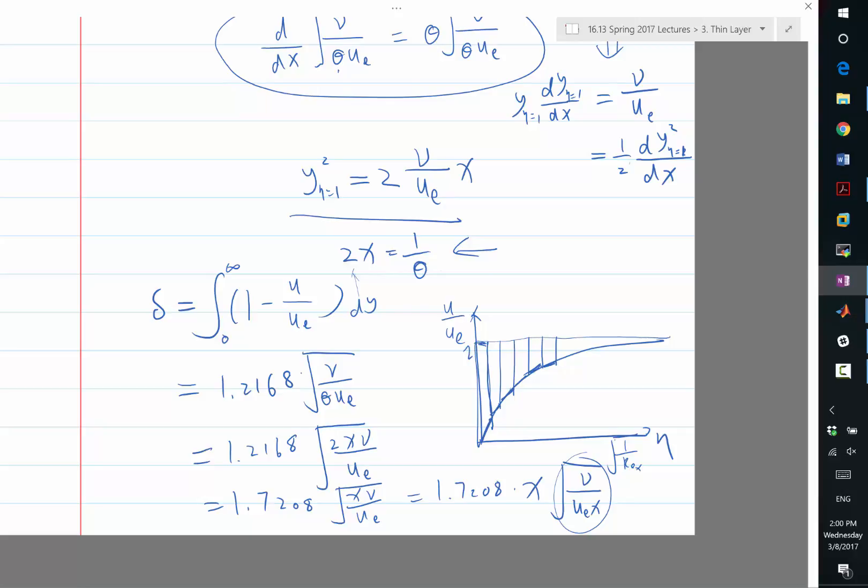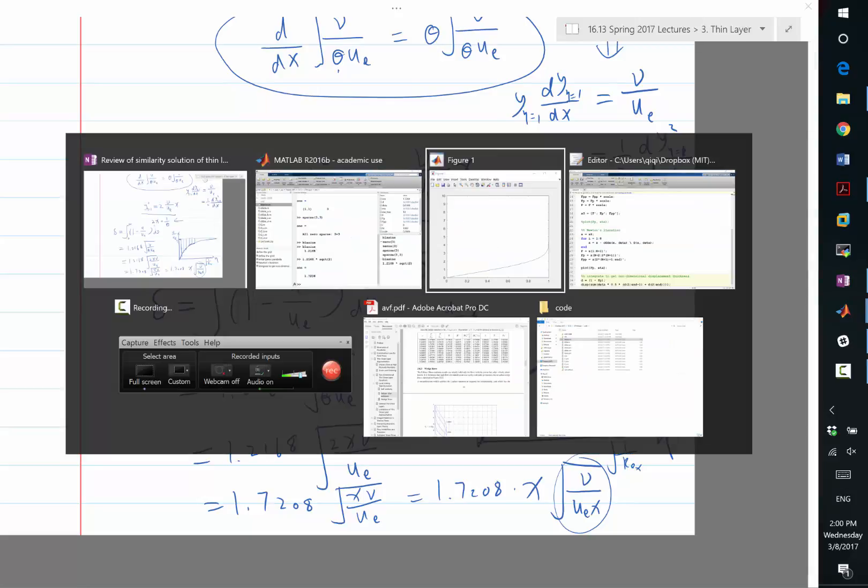Any questions so far before we move to Faulkner's equations? Can I just look at the boundary layer?